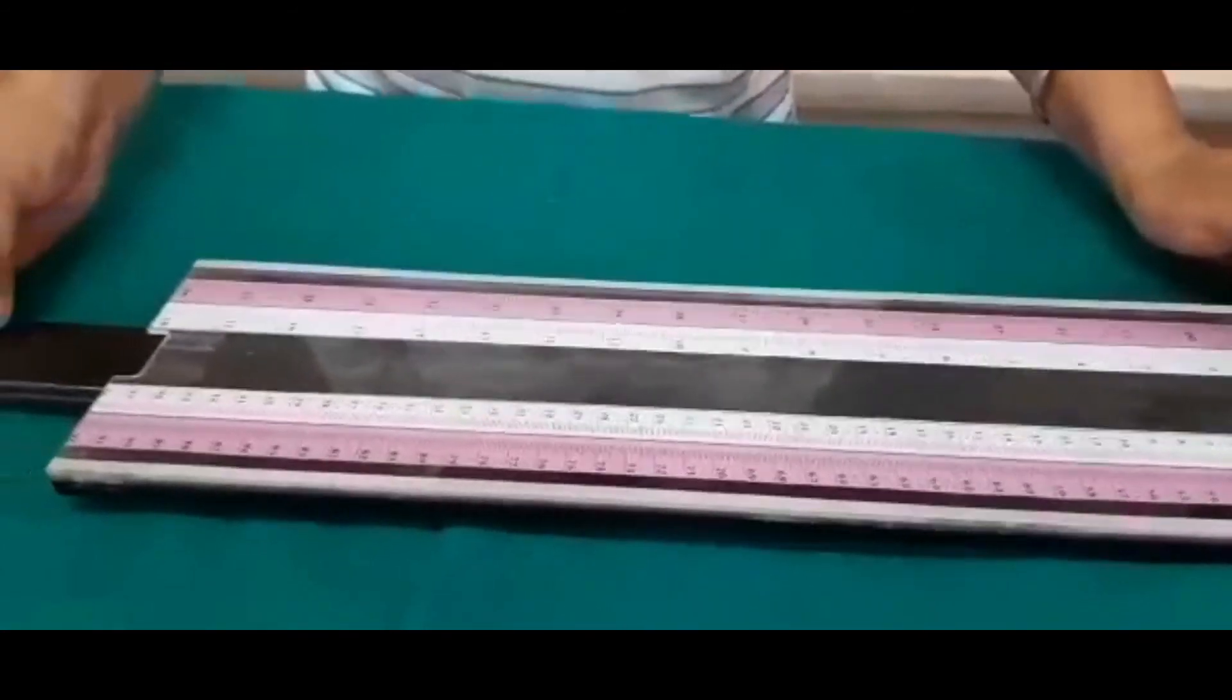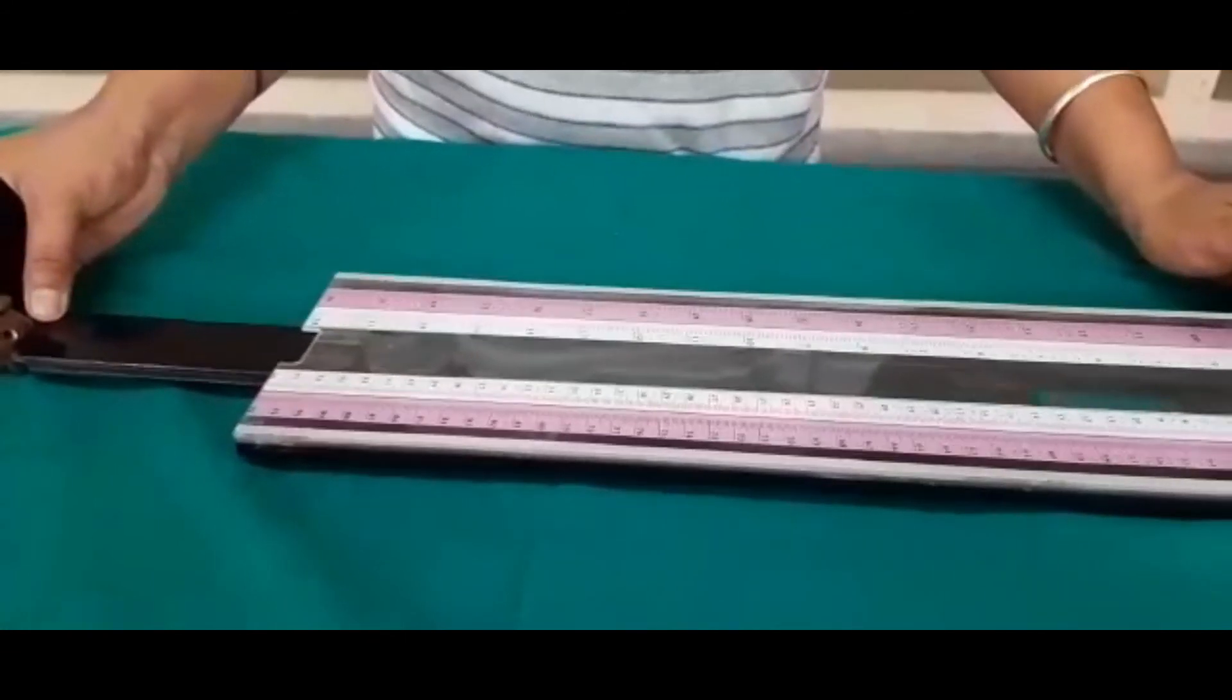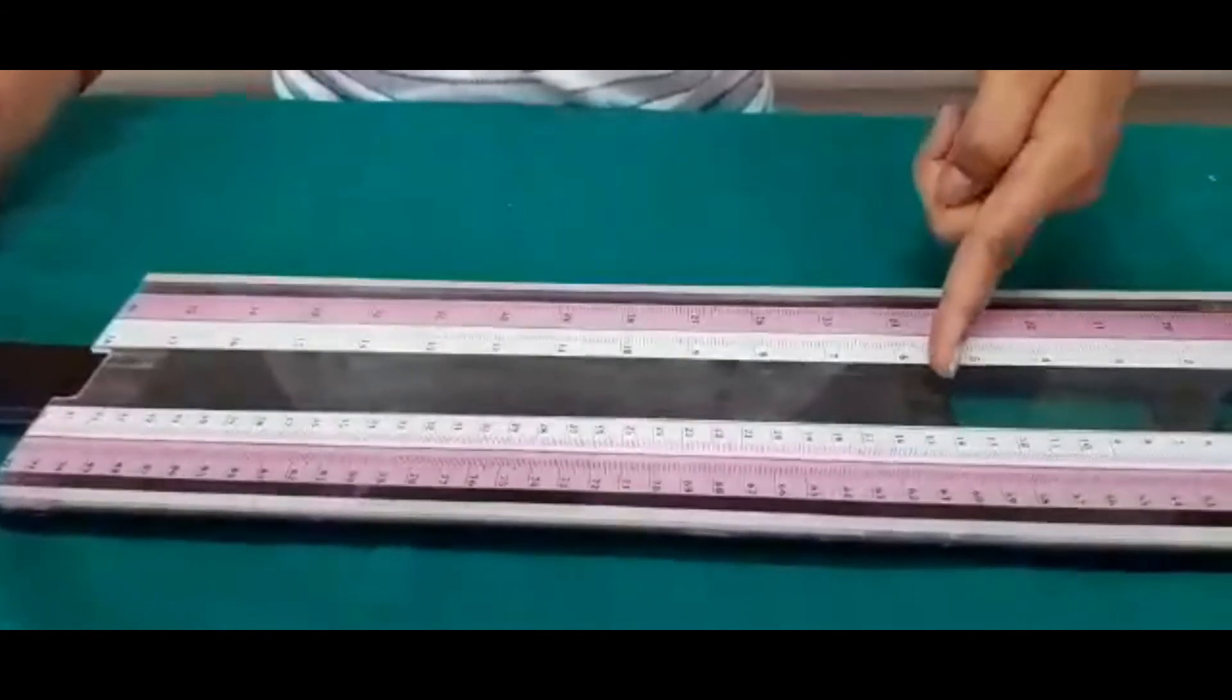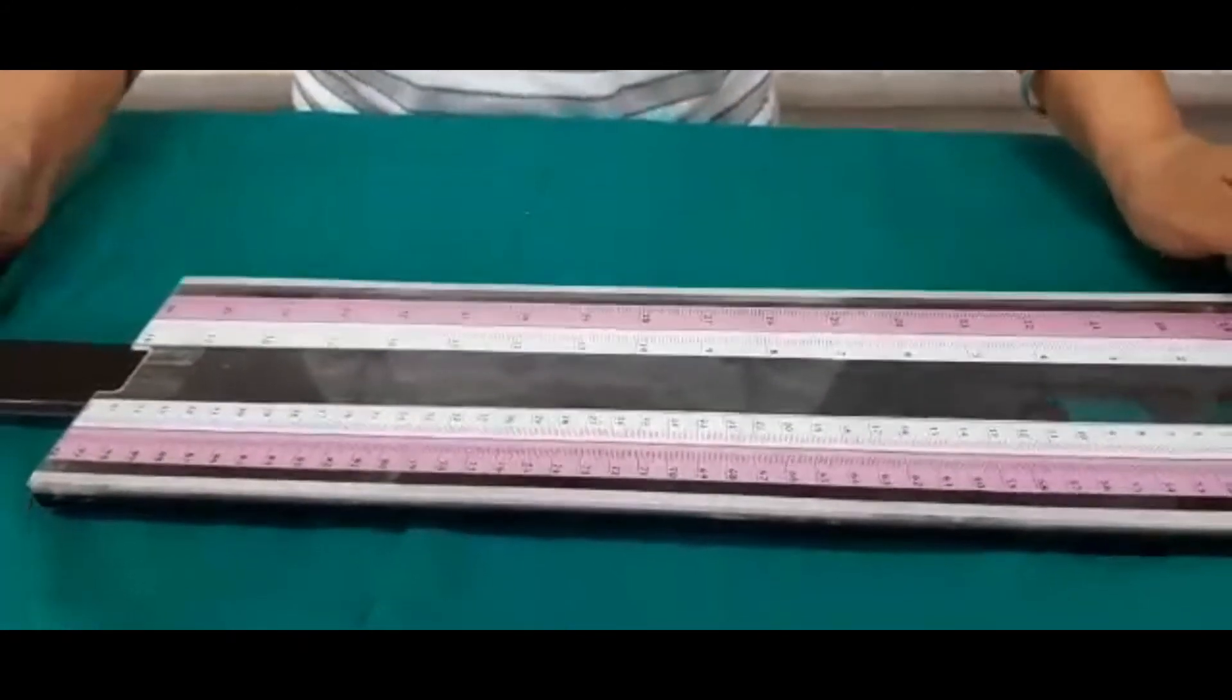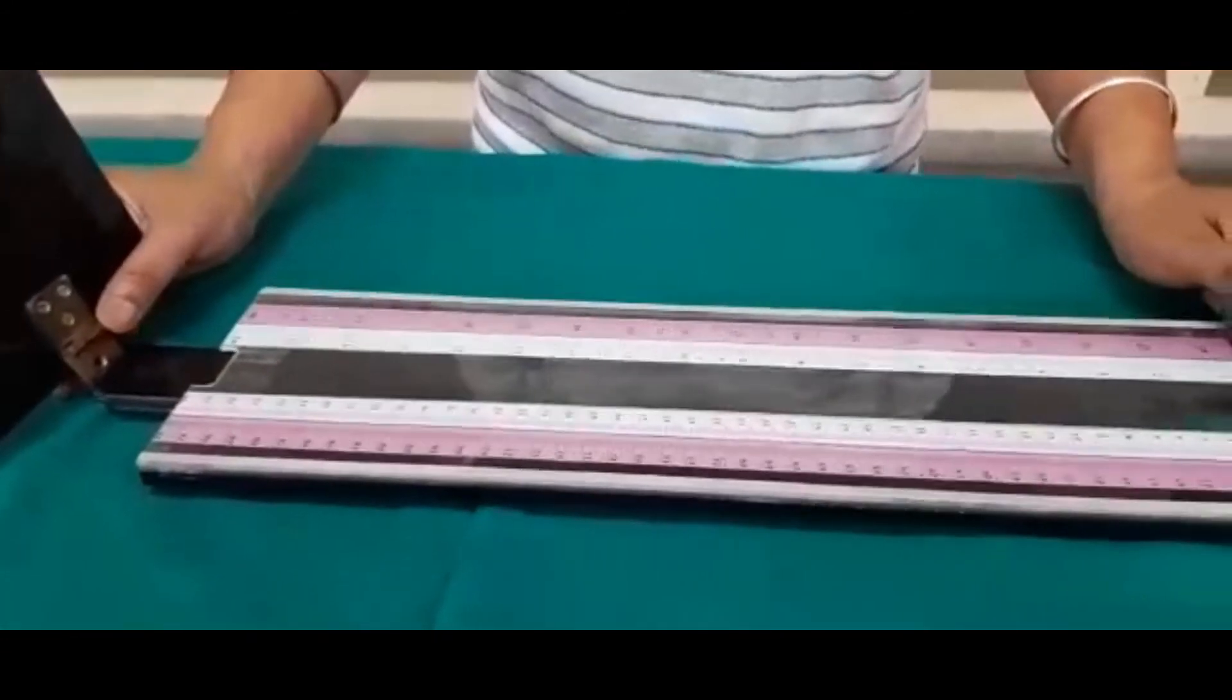And if our baby length is 60, then we can take this scale till 60, and this is 60. This scale helps to check the length of the infants.